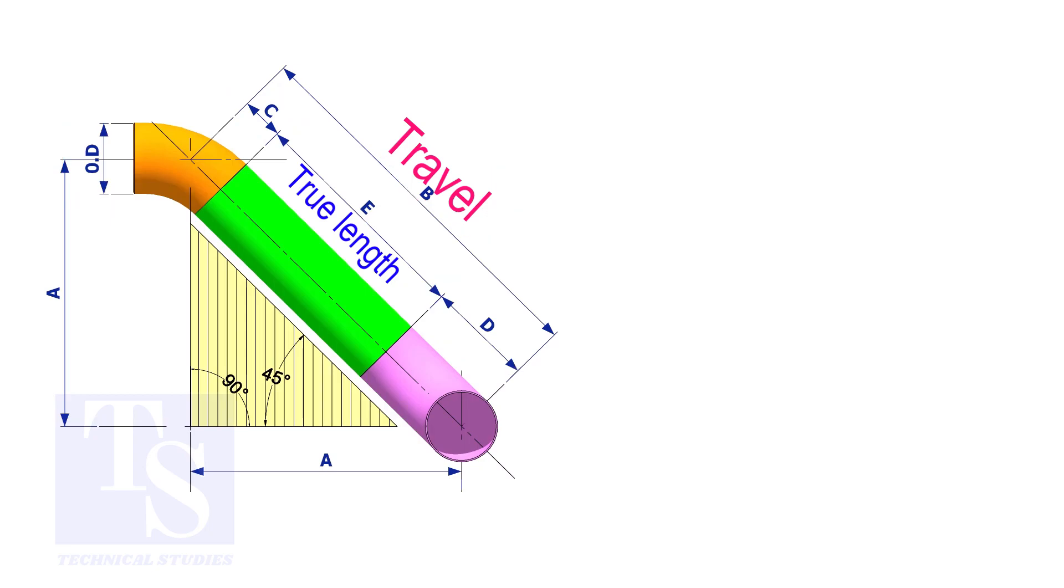Assume that the elbows are short radius. Nominal pipe size is 4 inch. The travel length is 1500 millimeters. The joint gap is 3 millimeters. Calculate the true length of the spool.